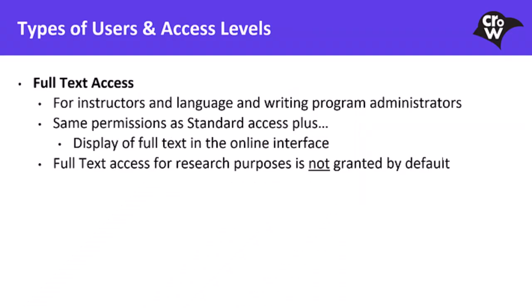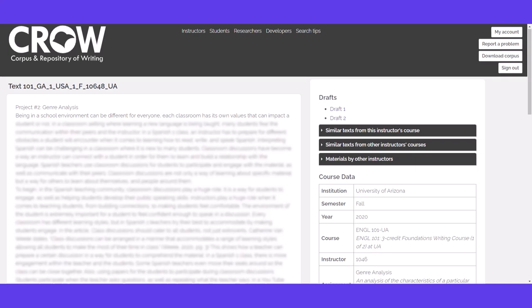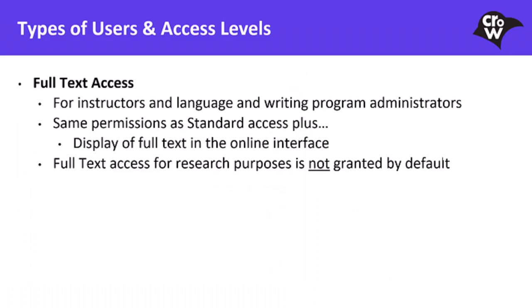Full text access is intended for instructors and language and writing program administrators. It gives users the same permissions as standard access, plus the display of full text in the online interface. If you'd like to access a small subset of CROW full text for research purposes, please write a detailed project description in your request so we can consider it carefully. It should be noted that full text access for research purposes is not granted by default. If you are a researcher, consider requesting offline access, which contains a representative sample of the CROW corpus with full text data.